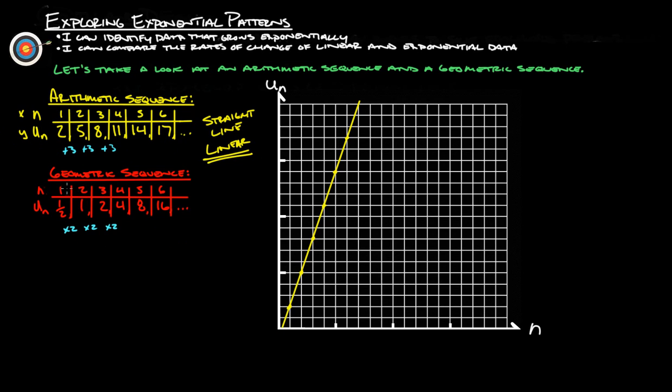Now, if we go off and graph our points on a geometric sequence, we're at 1, we're at 1 half. 2, we're at 1. 3 is at 2. 4 is at 4. 5 is at 8, because we just keep doubling. 6 is at 16. Now, if you'll notice this here, this definitely makes a curve.